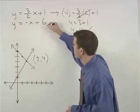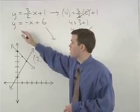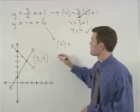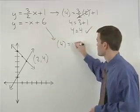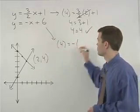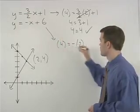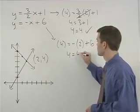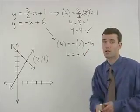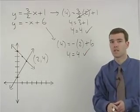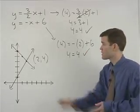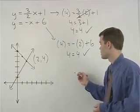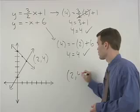For our second equation, y is 4 equals negative x, which is negative 2 plus 6. So 4 equals 4. And our second equation checks. So the solution to this system of equations must be the point 2, 4.